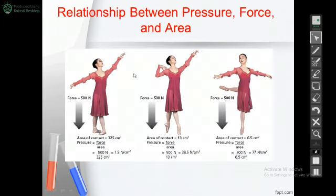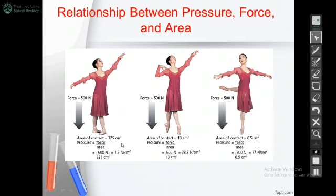Let's take an example. A ballerina has a mass, and mass times acceleration gives a force of 500 Newton. In the first case, the 500 Newton is applied when the ballerina is standing on two feet, on an area of 325 centimeters squared. So force over area — 500 over 325 — gives a pressure of 1.5 Newton per centimeter squared. The area here is larger, so the pressure is smaller.